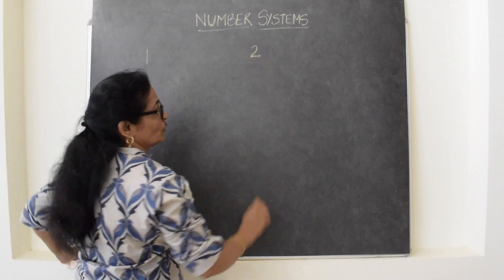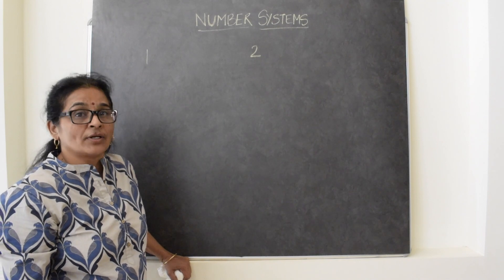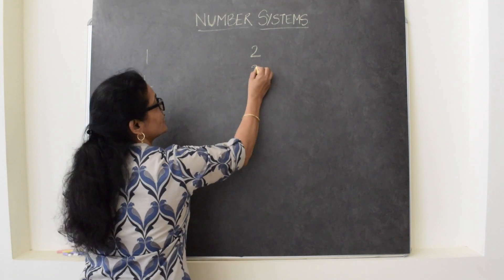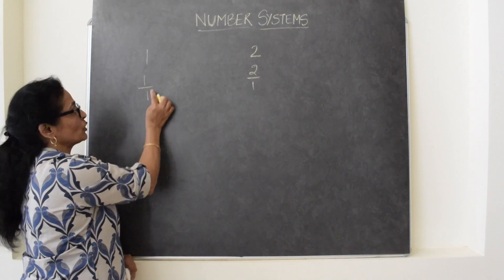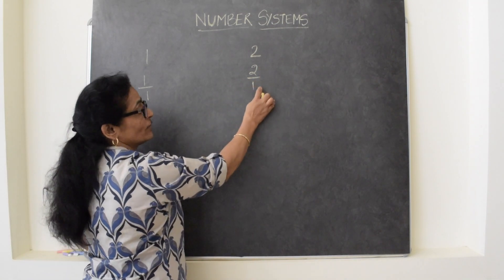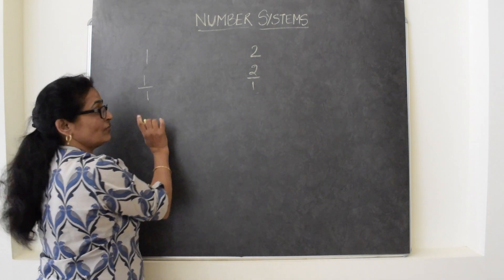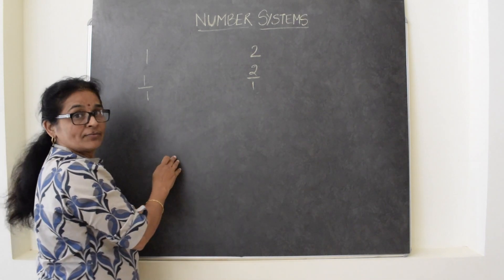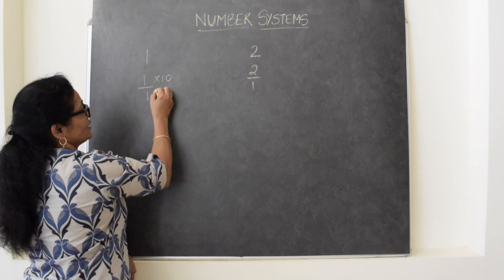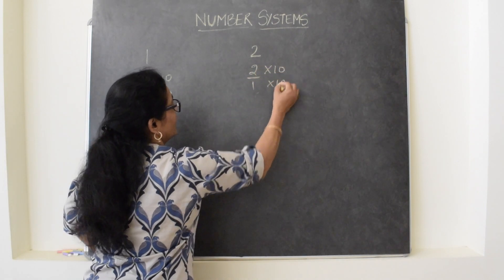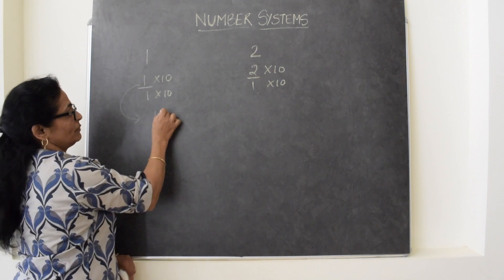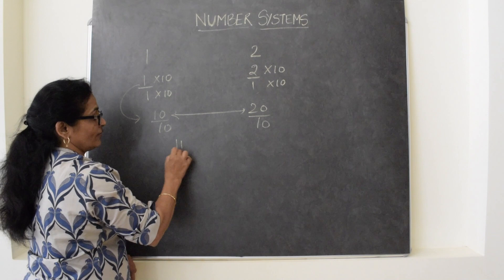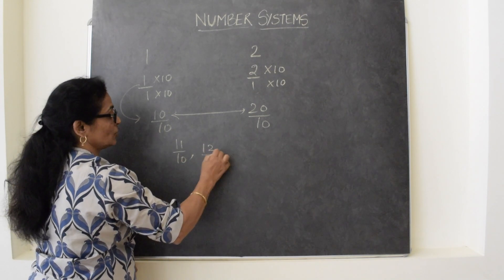Suppose two numbers are given, one and two, and we have to introduce the numbers between them. One can be written as 1 upon 1 and two as 2 upon 1. So every natural number, every integer, every whole number can be written in the form of rational numbers. One and two are the given numbers. An easy way is just write 10 in the numerator and denominator — the new number will become 10 upon 10 and this is 20 upon 10. To introduce numbers between these two, after 10 comes 11, so the new numbers are 11 upon 10, 12 upon 10, and so on.